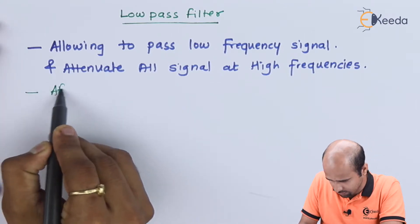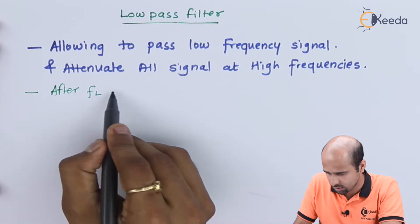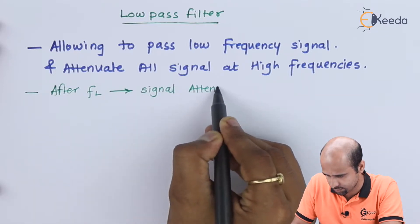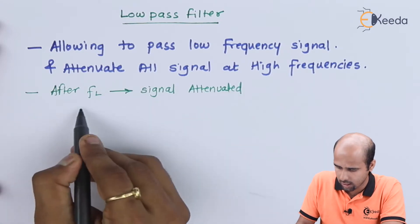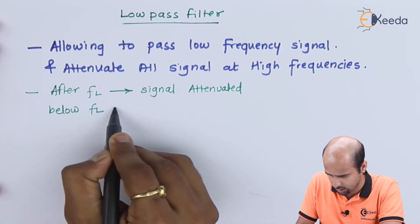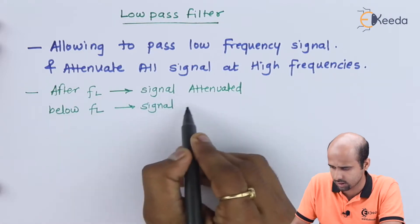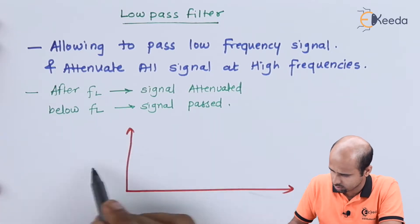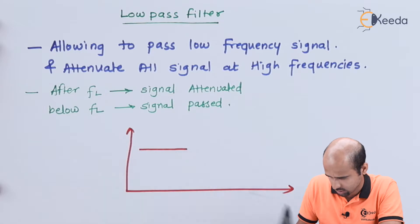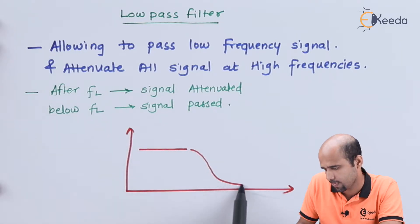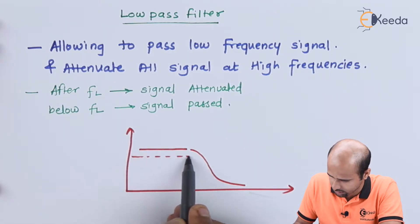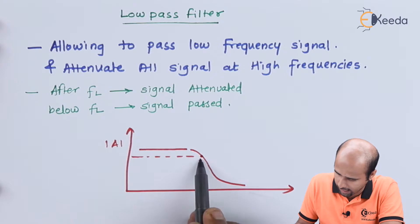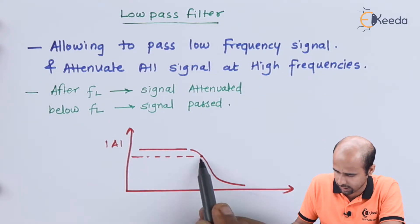After FL, the signal gets attenuation, and below FL the signal passes. We will draw the ideal low pass filter. This is the diagram — where this is the maximum value of gain, then this value at this corner frequency, or in terms of filter we can say it is the cutoff frequency, let's say FL.